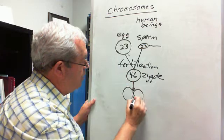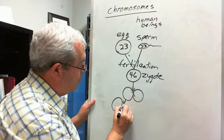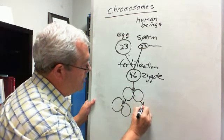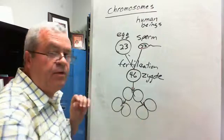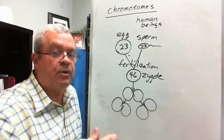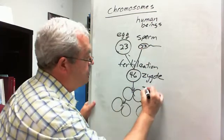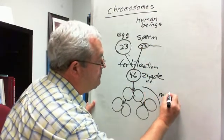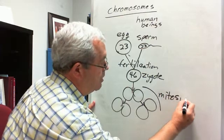That one cell became two. Those two became four. Four became 8, 16, 32, 64, 128, 256. And here we are, trillions of cells later, by a process that we'll study in this unit. It's a process called mitosis.